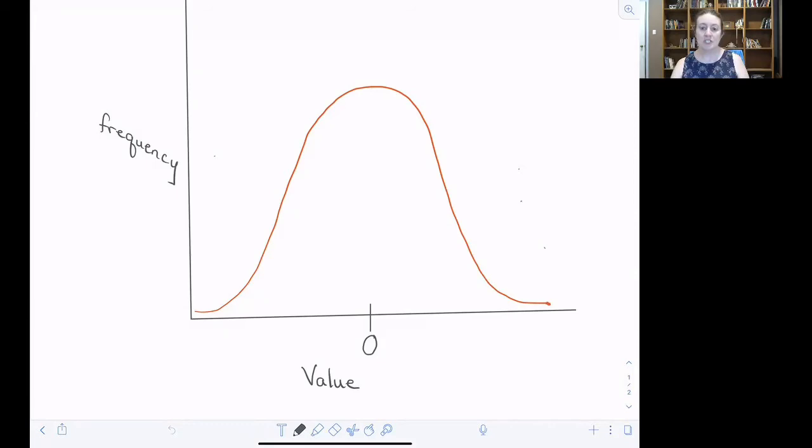We're going to take this distribution and randomly draw values from it. Each time we draw a value, we'll pretend that's an observation at a time step on our time series.